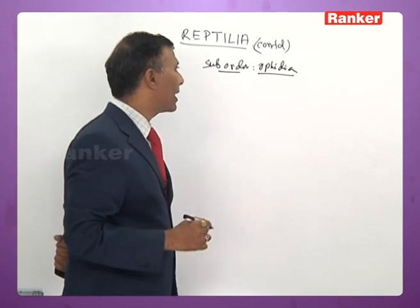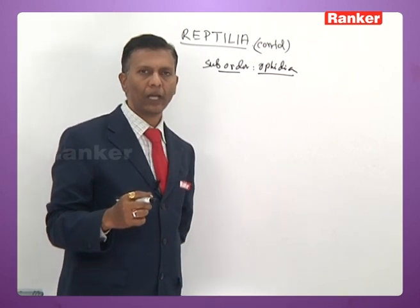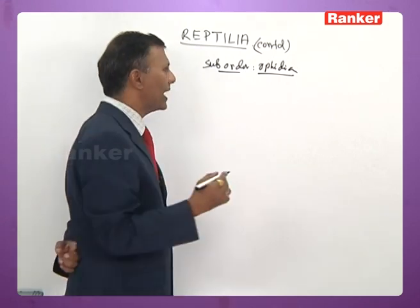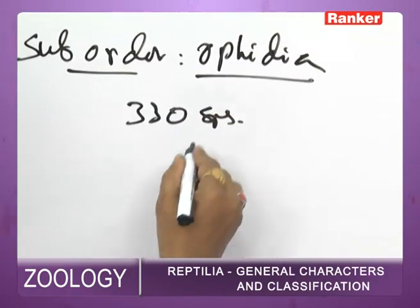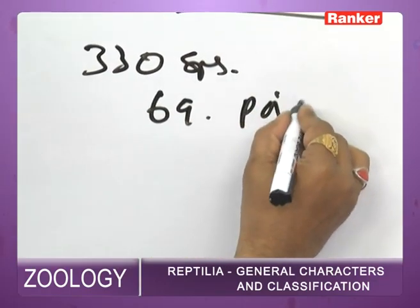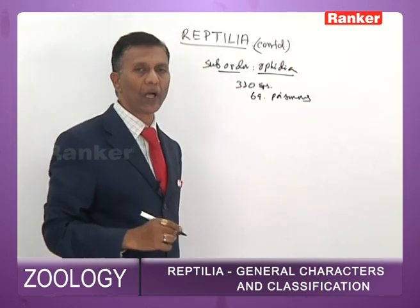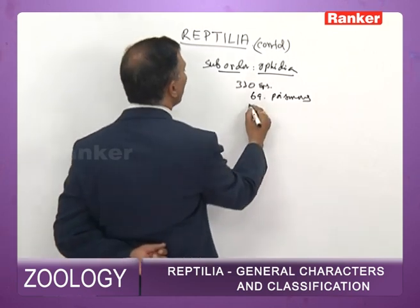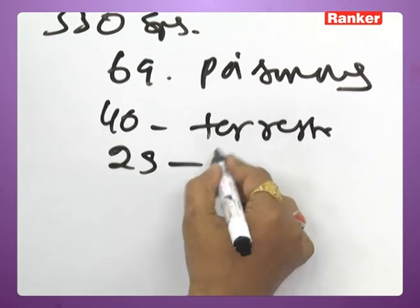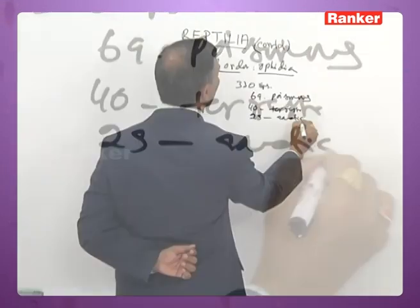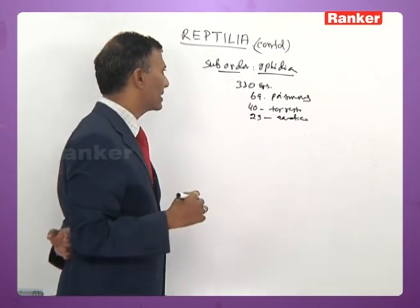Suborder Ophidia (snakes): there are about 3,300 species of snakes worldwide, of which only 69 are poisonous — approximately 40 terrestrial and 29 aquatic poisonous species.